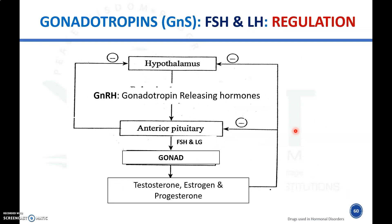Regarding the regulation of gonadotropin release from the anterior pituitary: the release of FSH and LH is under the control of the hypothalamus. Whenever there is any deficiency of FSH and LH, the hypothalamus releases gonadotropin releasing hormone (GnRH). GnRH stimulates the anterior pituitary, and the anterior pituitary then releases FSH and LH, which act on the gonads or reproductive system in both males and females.